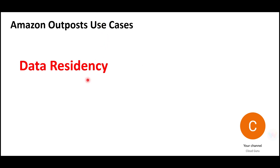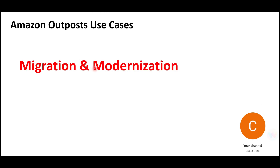There are also requirements where data residency is key. For example, in healthcare they do not want data to go out of a country, region, city, or state. So you deploy Outpost Rack there, put S3 on it, and the data will reside in those S3 buckets on-premises.